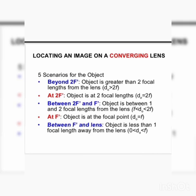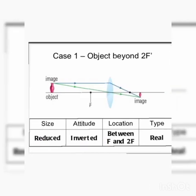You need to know five cases. If you have an object in different positions, where will the image be? We will discuss: object beyond 2F, object at 2F, between 2F and F, at F, and between F and the lens. These are five cases.